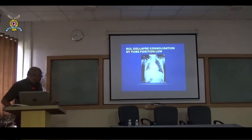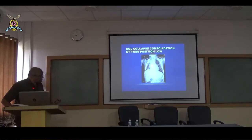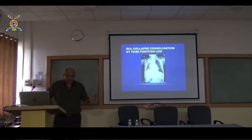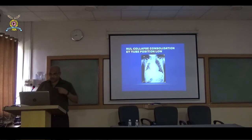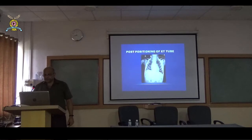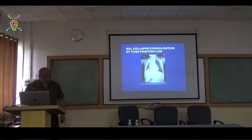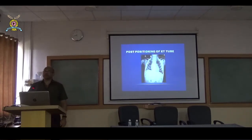Here the right upper lobe is now collapsed and the endotracheal tube is low in position. Because of its low position, the right upper lobe has not been aerated and has undergone collapse. After the ET tube was repositioned and pulled up a bit, the collapse resolved. Correct position of the endotracheal tube is very, very important in children.